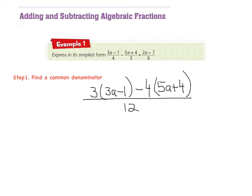And then if I look to the next sign, the next sign is a plus, so I make sure I write that down. I have to make this line a bit longer. And 6 goes into 12 twice, so it'll be 2 times whatever is on top of the fraction, which in this case is 2a minus 7.